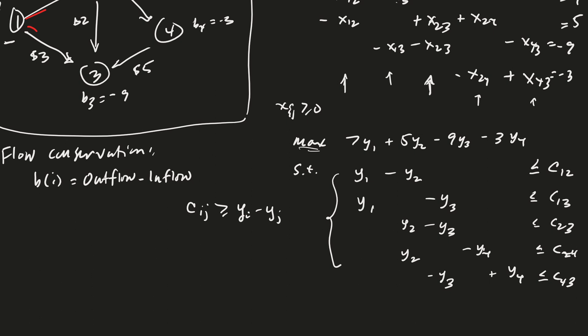If I bring these over, then I see that cij - yi + yj >= 0. This is a constraint for the dual.